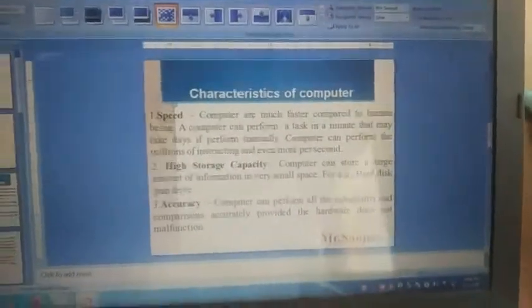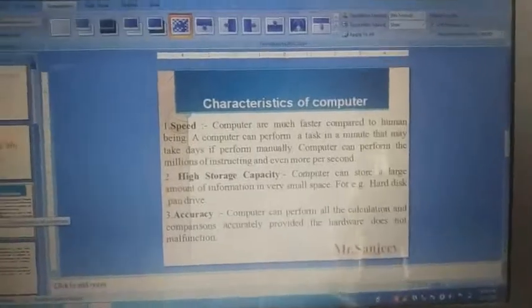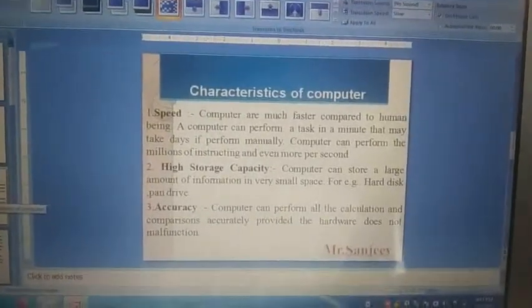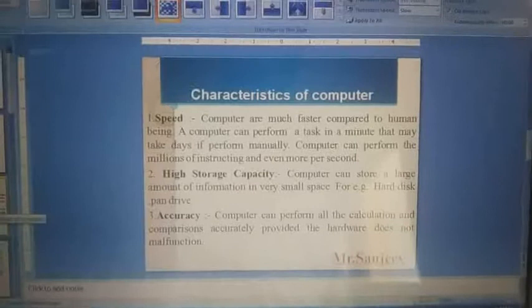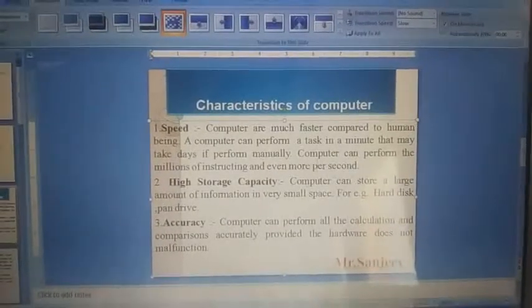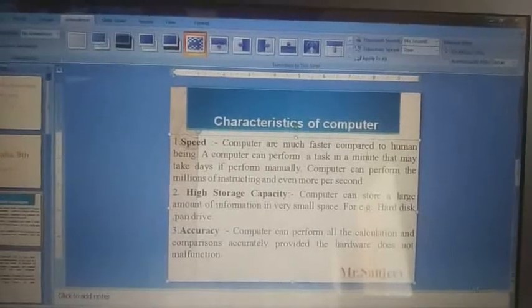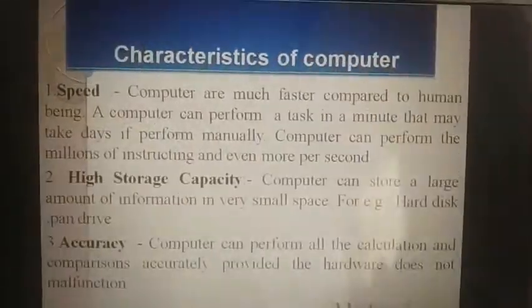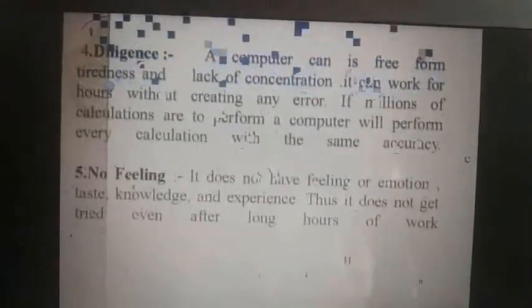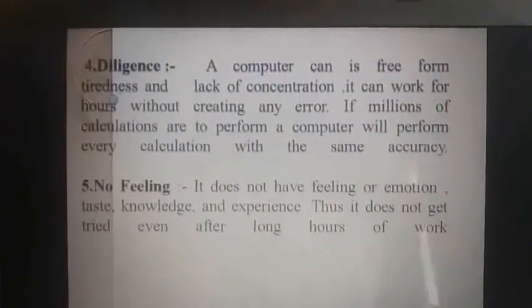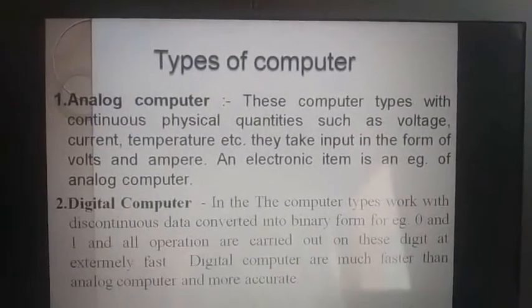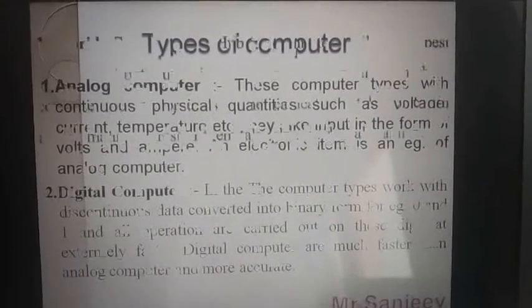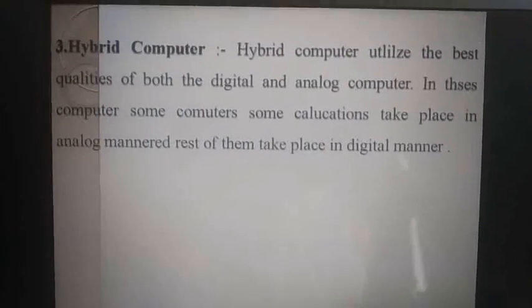Revision: اس topic میں ہم نے پڑھا — characteristics of computer: first speed، second storage capacity، third accuracy، fourth diligence، fifth no feeling۔ اور types of computer: first analog computer، second digital computer، third hybrid computer۔